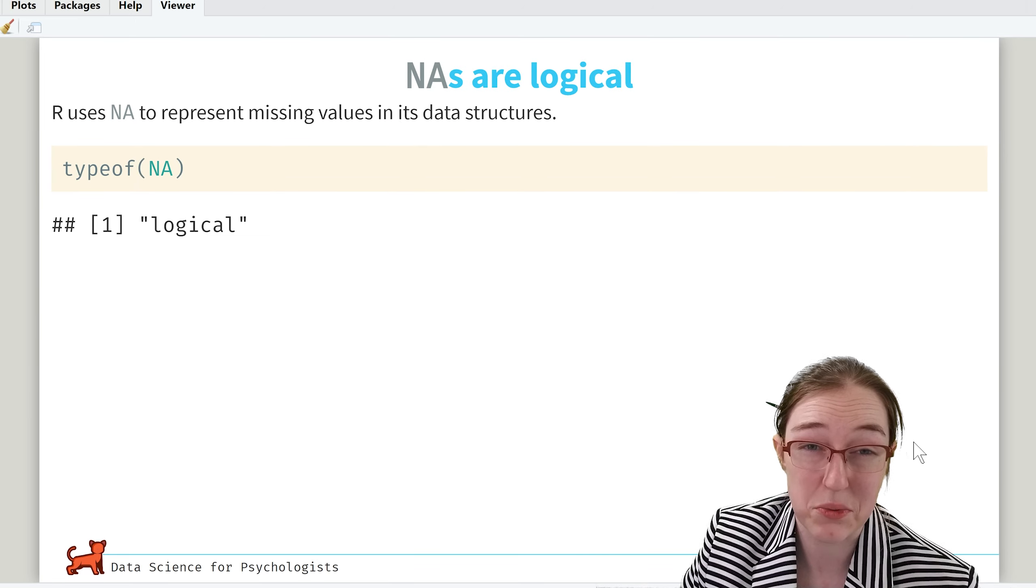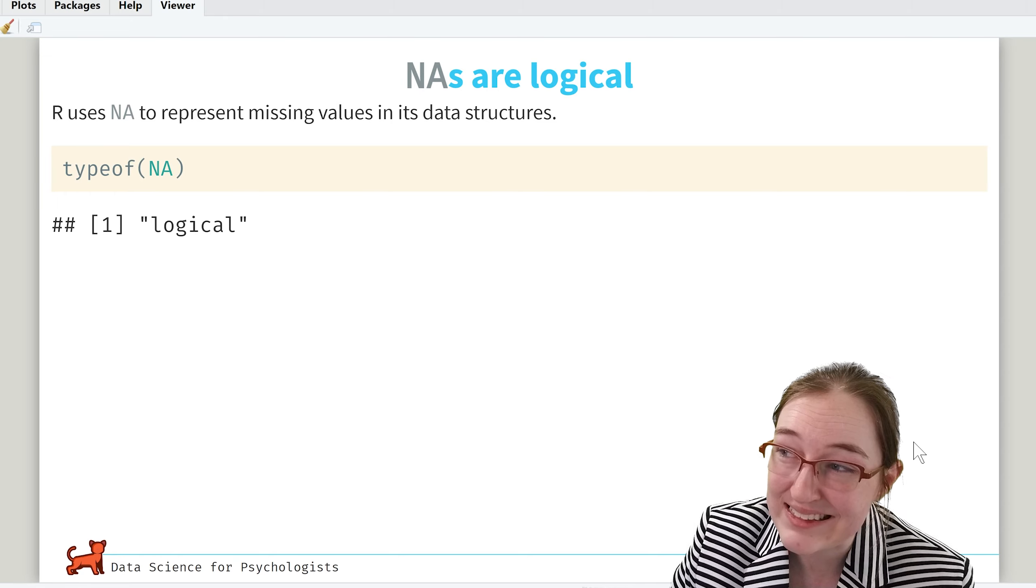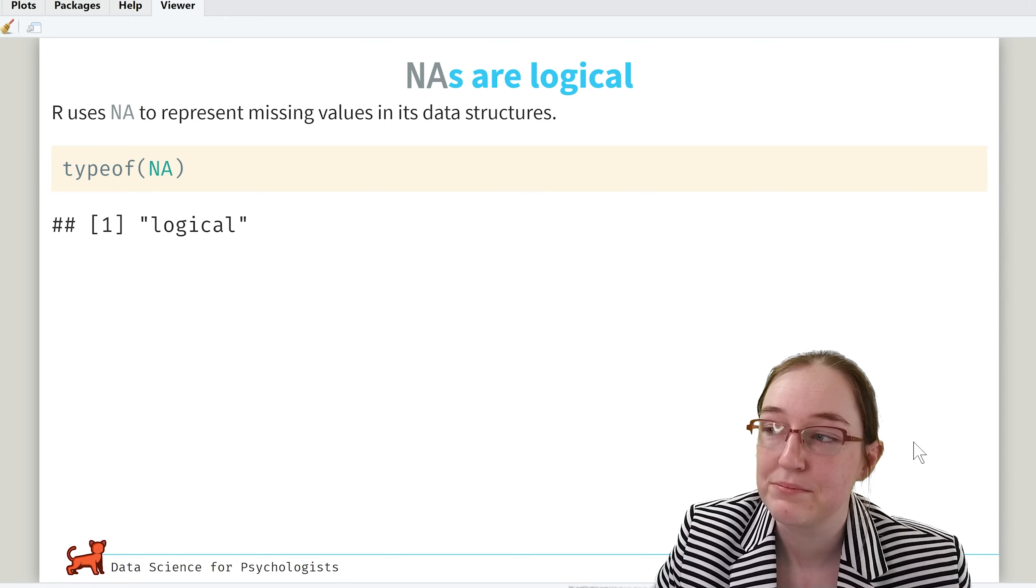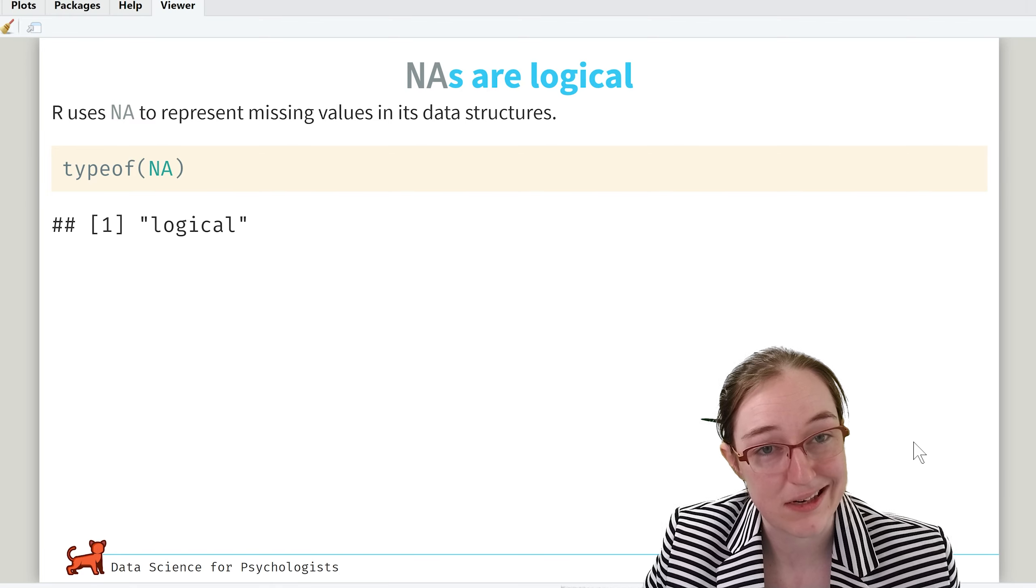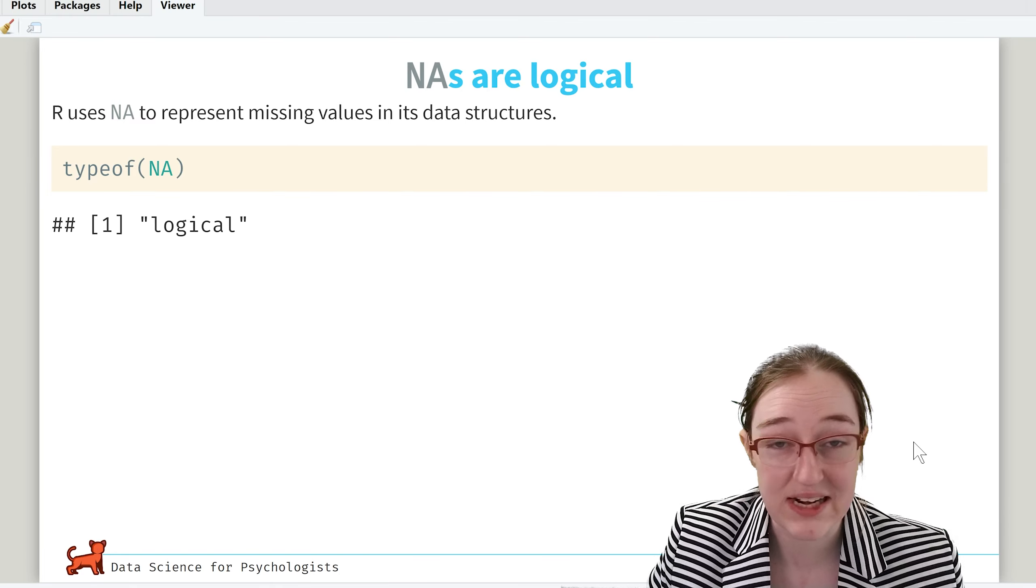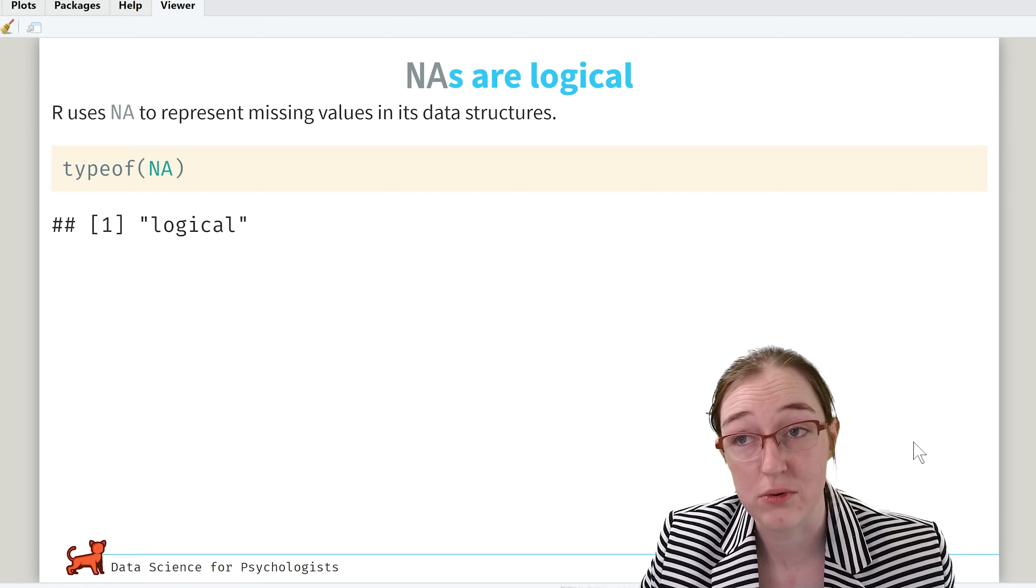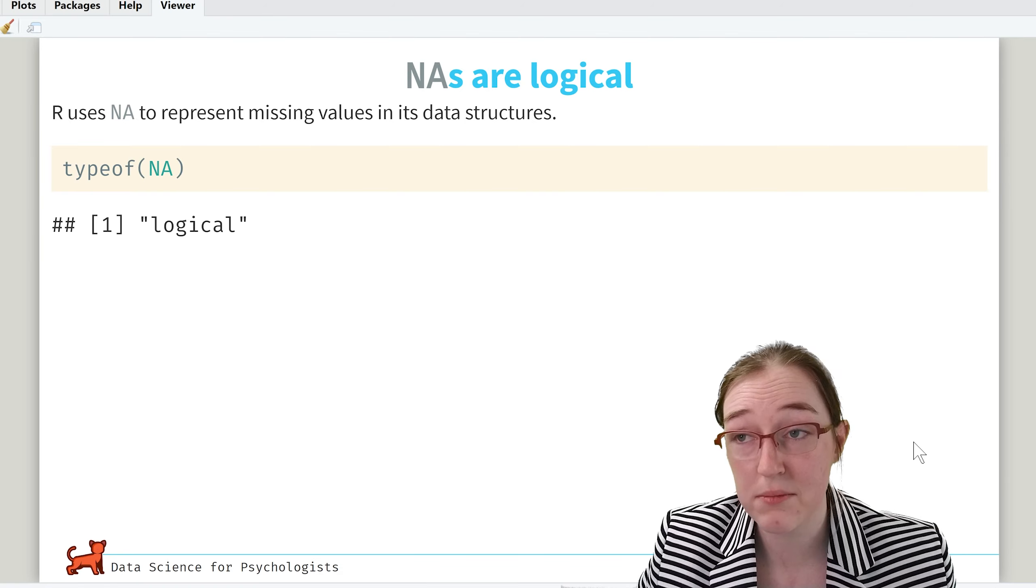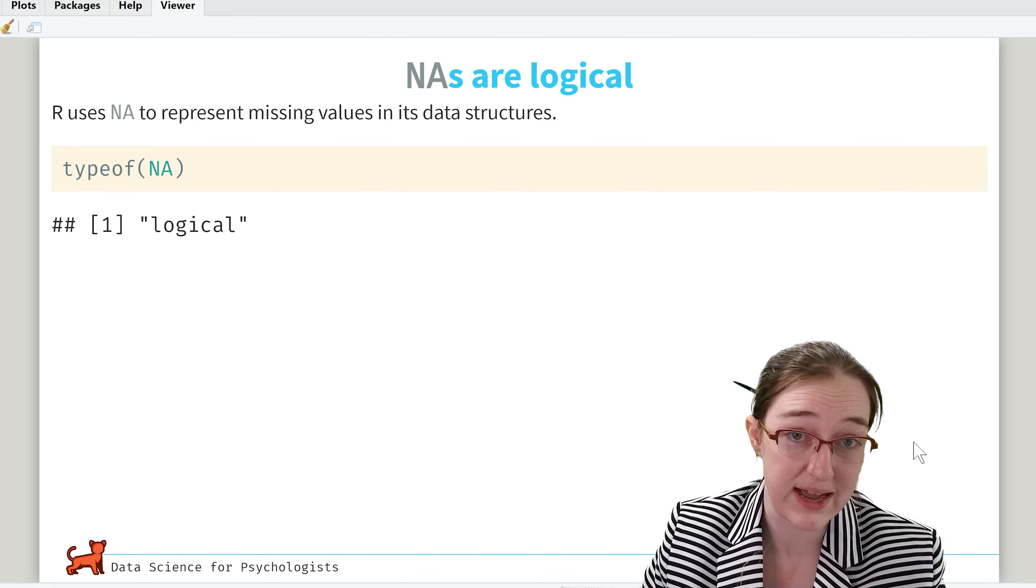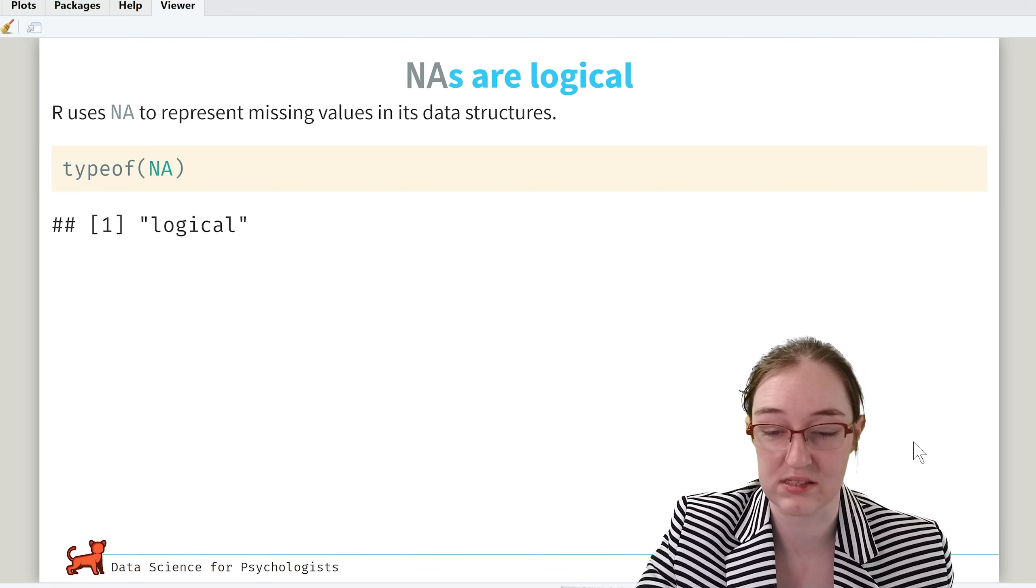Now if you want to know, NA is technically a way to represent missing values in its data structure. And the type that NA takes is logical. So when you combine these things, it can be a bit of a pain. You can make NAs that are different in types, but the default is logical.